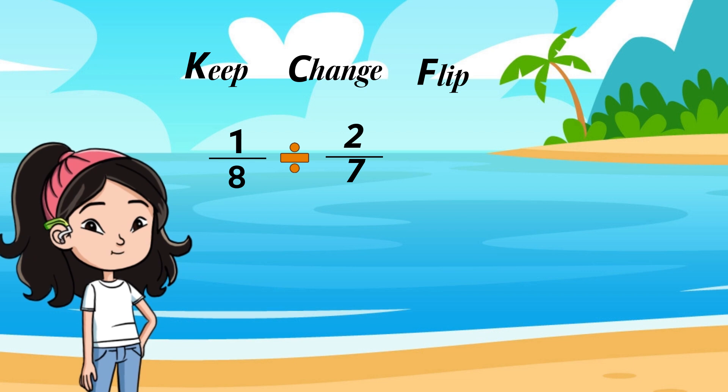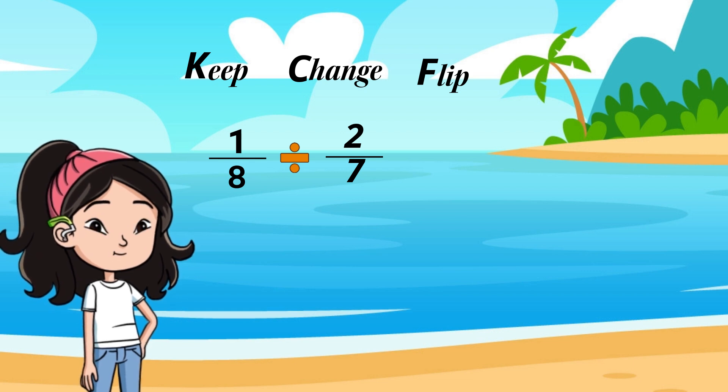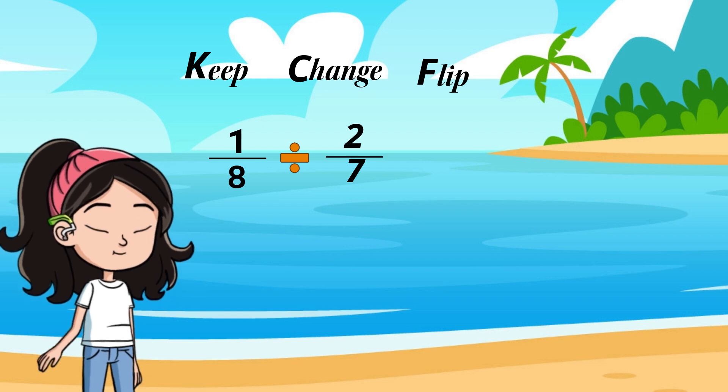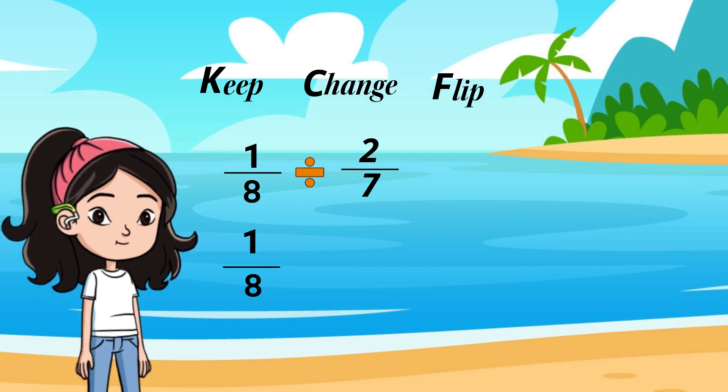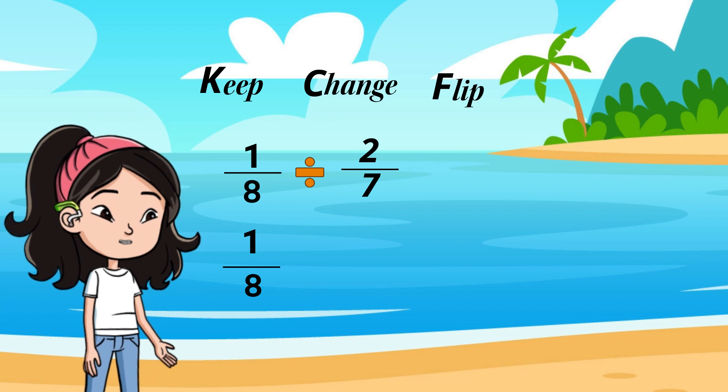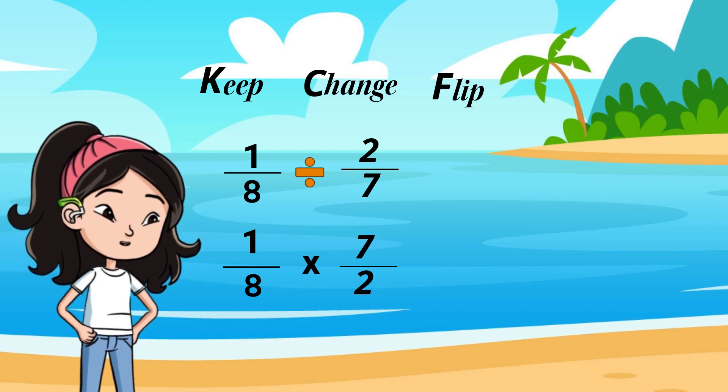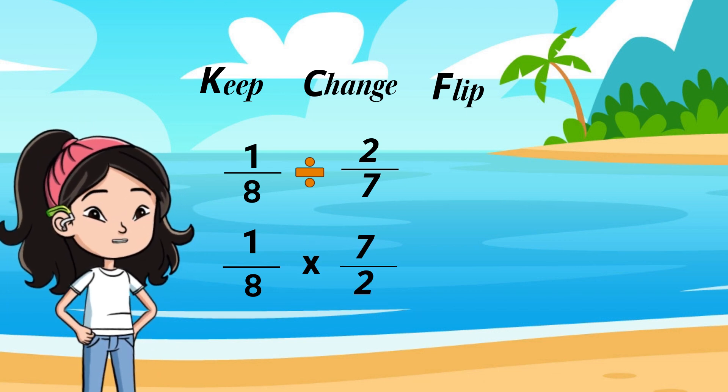Let's do another example. 1 eighth divided by 2 sevenths. Keep your first fraction. Change your division to multiplication. Write the reciprocal or flip your second fraction.